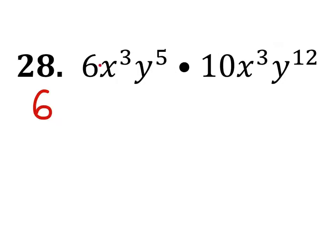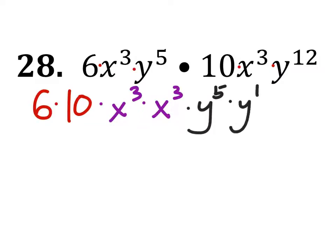We can reorganize this because it's all multiplication in here. So we'll use the commutative property of multiplication. 6 times 10 times x to the power of 3 times x to the power of 3 times y to the power of 5 times y to the power of 12.